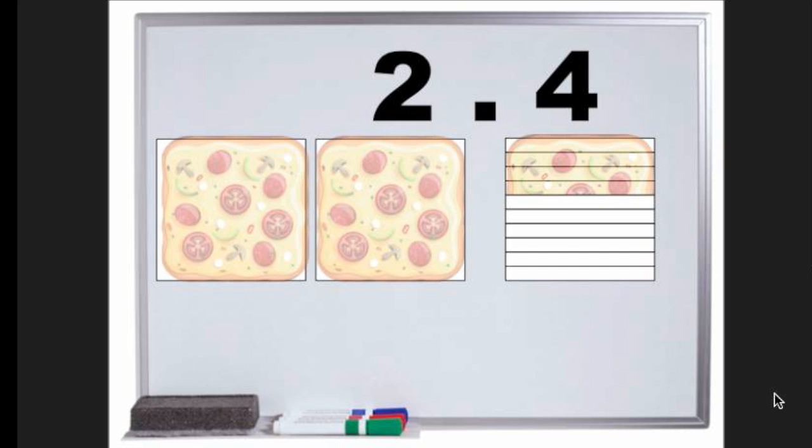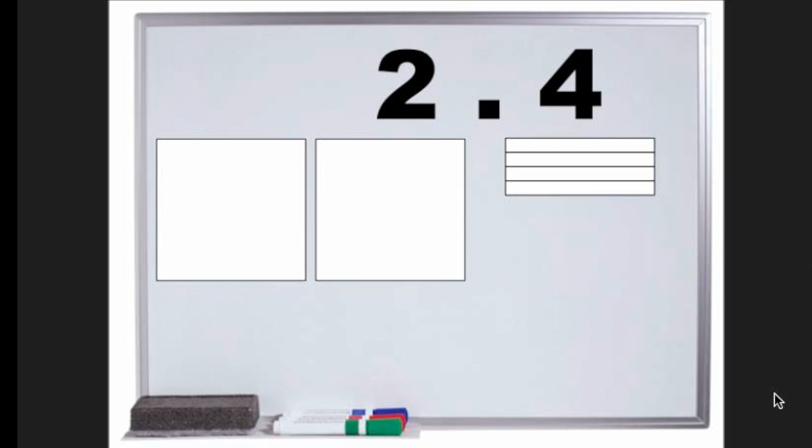So we only have 2.4 pizzas left. In activity 1, you will have to colour in the amount you have using pizzas. 2.4 coloured in looks like this.